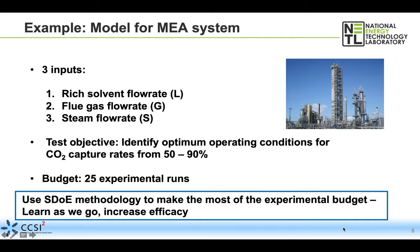This example is a model for an MEA system where we have three inputs of interest: rich solvent flow rate, flue gas flow rate, and steam flow rate. The test objective for this experiment is to identify optimum operating conditions for CO2 capture rates from 50 to 90%. We have a set experimental budget of 25 runs, and we want to design an experiment to make the best use of that budget.